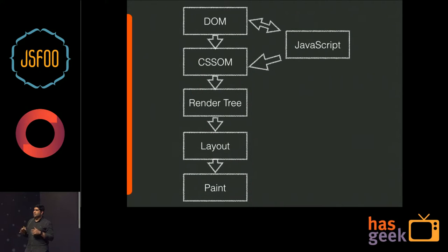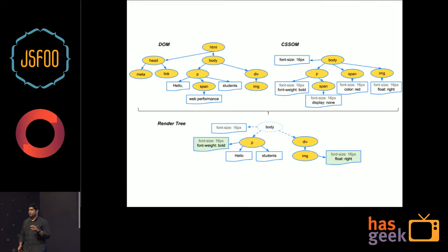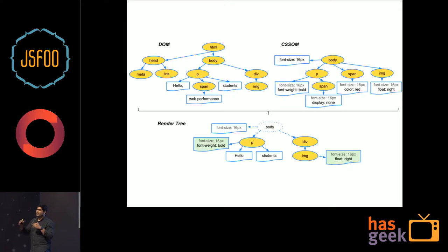Once the render tree is ready and the browser knows what needs to be rendered, it calculates the layout for the whole render tree — the dimensions of what should go where. Then it paints, flushing out pixels on your browser. Essentially the browser writes to the screen buffer via the graphics engine and then the operating system renders the pixels.